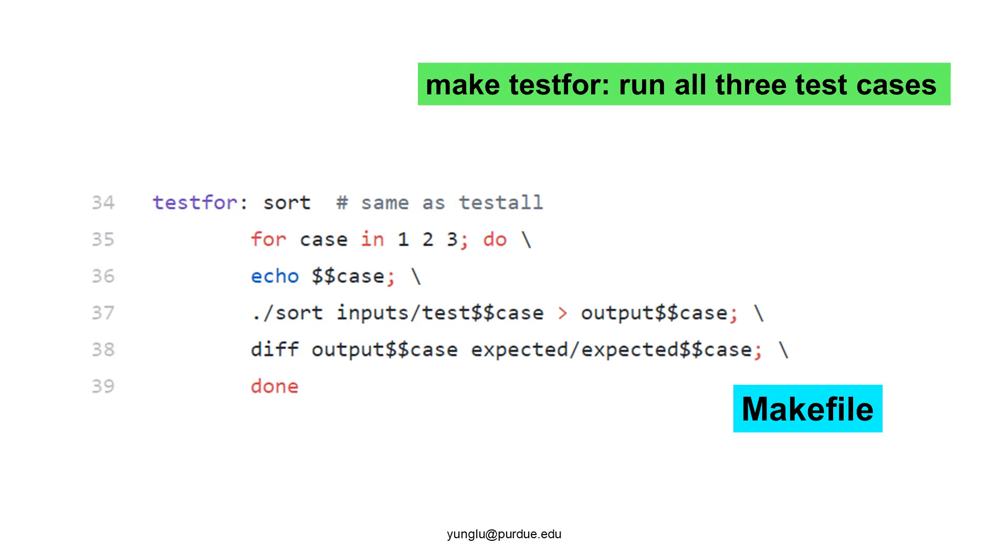If you type make testfor, all three test cases will run. How does this work? There is a counter called case and its value can be 1 or 2 or 3. To get the value of case, we need to put two dollar signs in front.